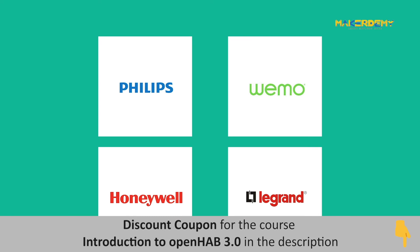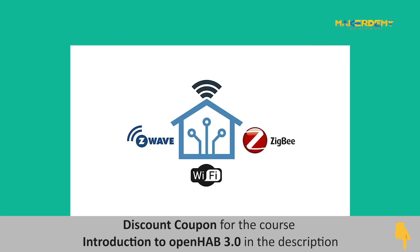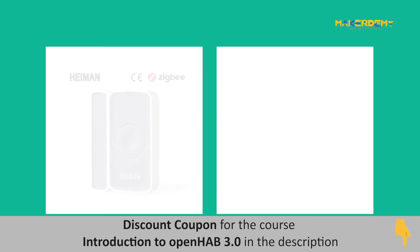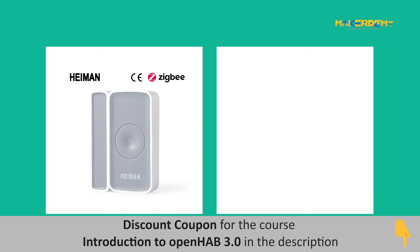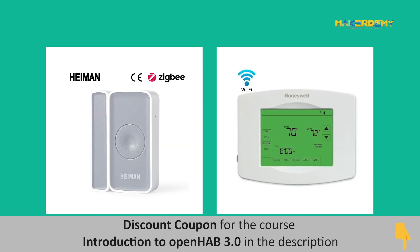Popular companies like Philips, Wemo, Honeywell, and Legrand provide various wireless products for home automation. Using wireless standards we can combine different technologies to create simple yet powerful applications. For example, you might have a ZigBee door contact sensor and a Wi-Fi based thermostat in your house.